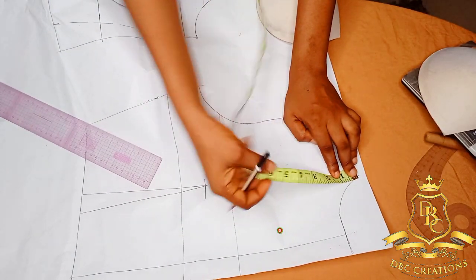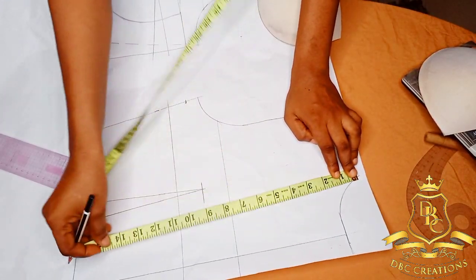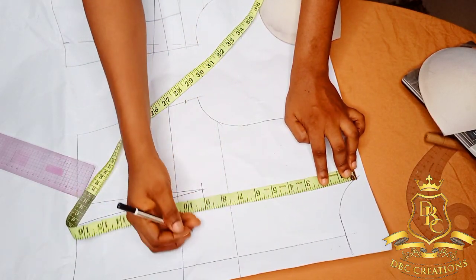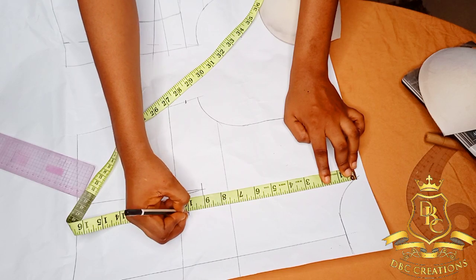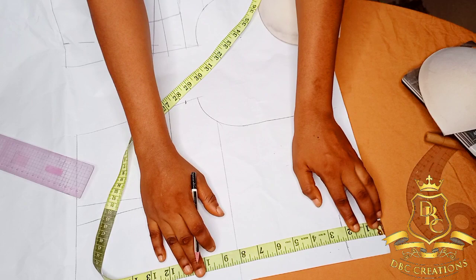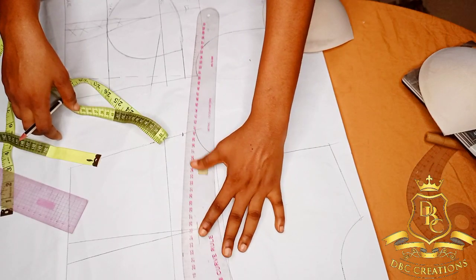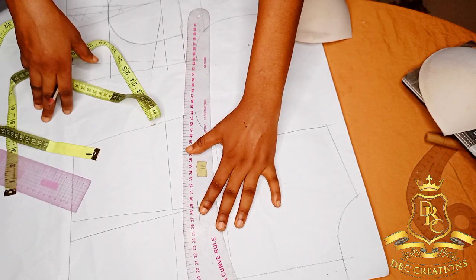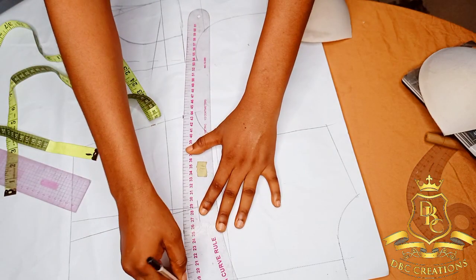So from this point, I'm going to determine how deep I want the back to be. So I'm going to make mine to be 10. So from here I'm going to connect the lines together.